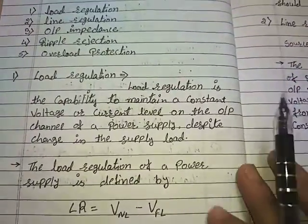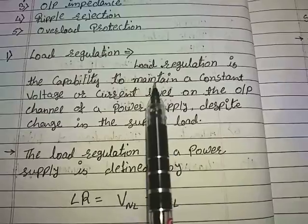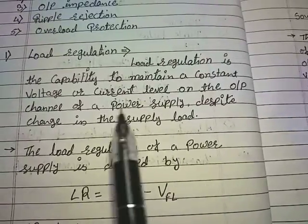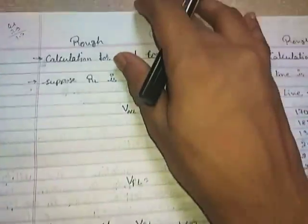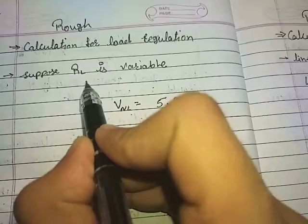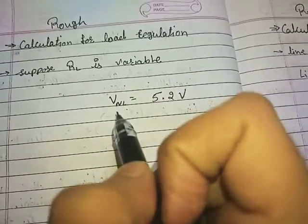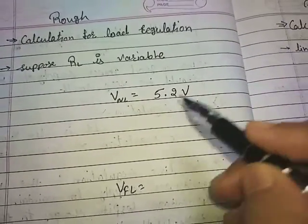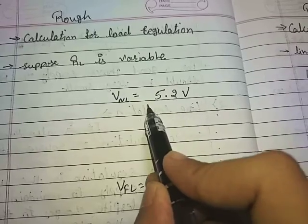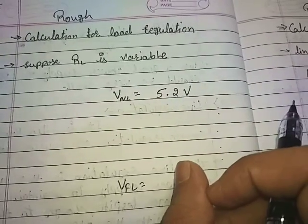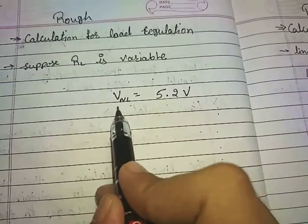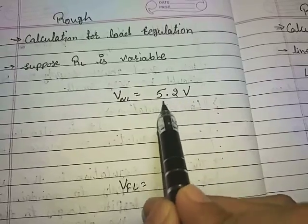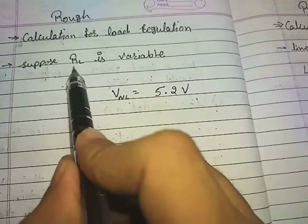Now what is load regulation in practice? Load regulation states that the output should remain constant whatever the change in load. For example, suppose I have a power supply in which the load resistor RL is variable. First, instead of applying a load, I remove the load resistor and calculate the output voltage — I got 5.2 volts at the output. That is known as VNL: the output voltage when no load is applied.